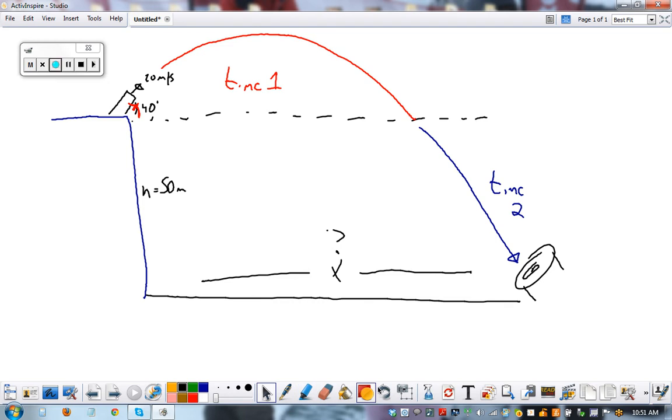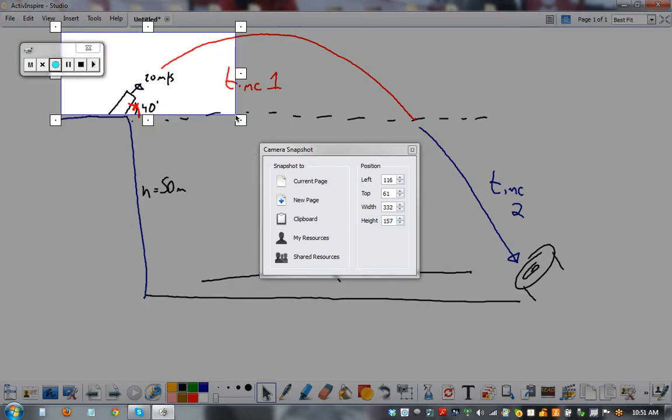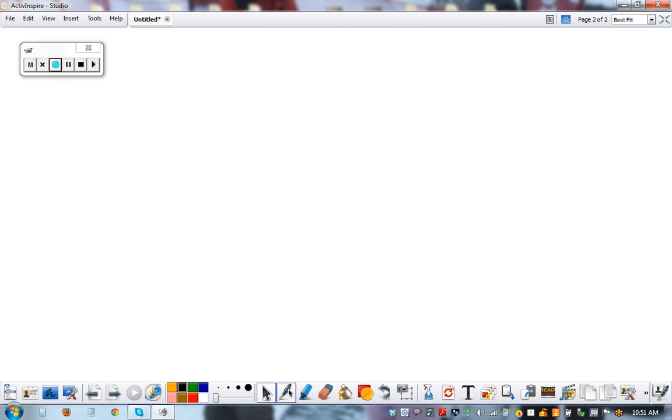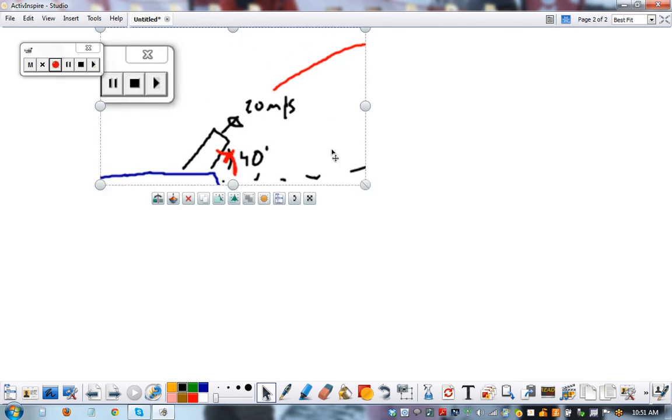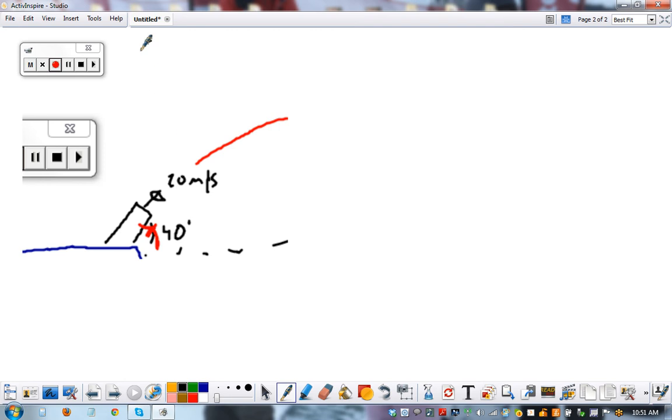So let's go through our steps. This is going to be step one. Step one on your notes: solve for components, Vx and Vy. Of this 20 meters per second, how much is going upward? And how much is horizontal motion? Here's how we do it.